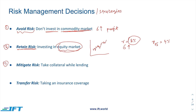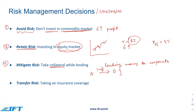The third approach is to mitigate risk. For example, if you are a bank and your major business is to lend money to corporates, SMEs, and individuals, you cannot avoid giving loans. But what you can do is take collateral while lending. So if bank A gives a one million dollar loan to party B, bank A can ask party B to submit gold equal to the amount of the loan.